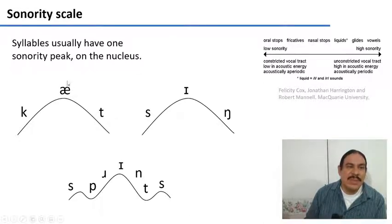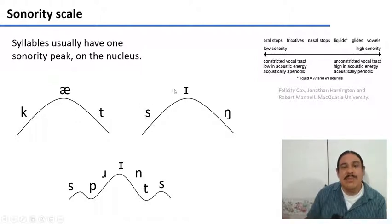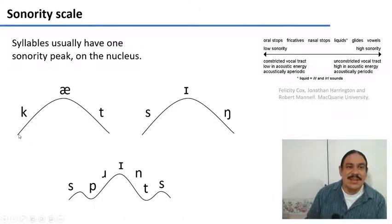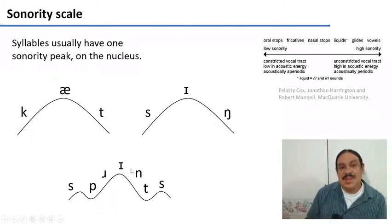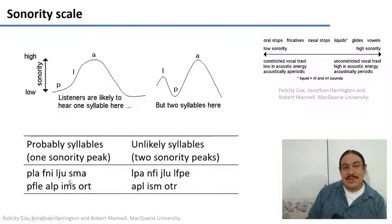Syllables usually have one sonority peak. You have to start with sounds of low sonority, climb up to the peak, and then come down. In 'cat,' you reach a peak at the vowel and then descend onto a stop. In 'sing,' you begin with a fricative, go up with a vowel, and come down with a nasal. Syllables in many languages have one distinctive peak of sonority, and the surrounding parts must go from low sonority to higher sonority as you approach the center. There can be slight exceptions — for example, 'sprints' oscillates in sonority but still has one distinguishable peak.